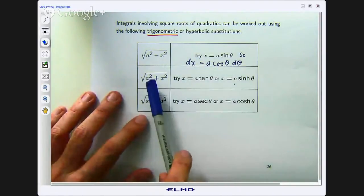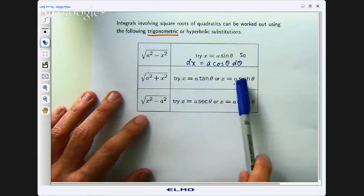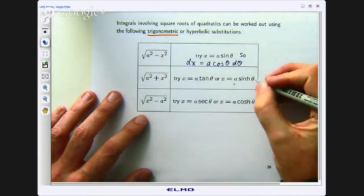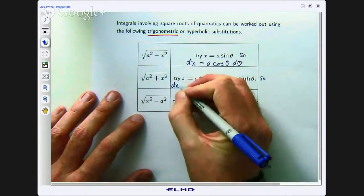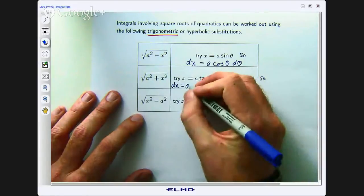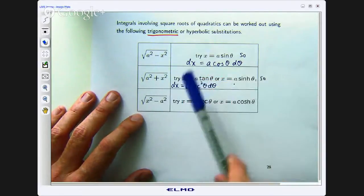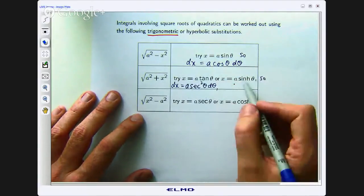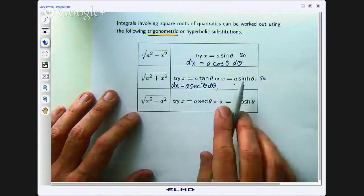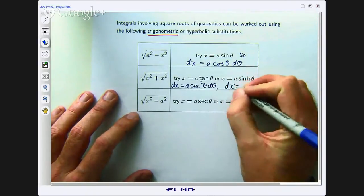If we have an integral involving something like square root a squared plus x squared we can try either of these substitutions and in that case we would have dx equals a sec squared theta d theta from the first one and in the second case we differentiate hyperbolic sin you will get hyperbolic cos.